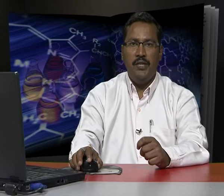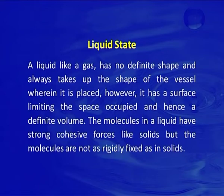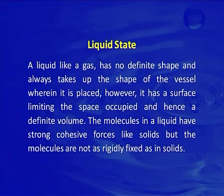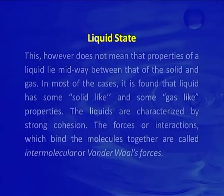A liquid, like a gas, has no definite shape and always takes up the shape of the vessel wherein it is placed. However, it has a surface limiting the space occupied and hence a definite volume. The molecules in a liquid have strong cohesive forces like solid, but the molecules are not rigidly fixed as in solid. Liquid is much less compressible and far denser than a gas. The densities of liquids and crystalline phases of the same substance are usually only slightly different. Thus the liquid state is intermediate between the gaseous and solid state.